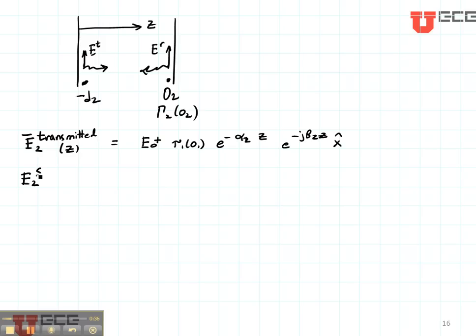E2, I'm going to call it a source, at region O2 is going to be equal to E transmitted at location O2. That is at a distance Z equals D2. So it's E0 plus gamma 1 at O1, E to the minus alpha 2 D2, E to the minus J beta 2 D2, in the X direction.